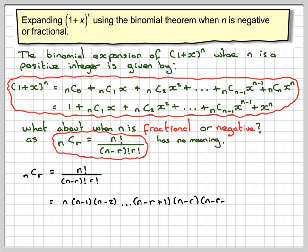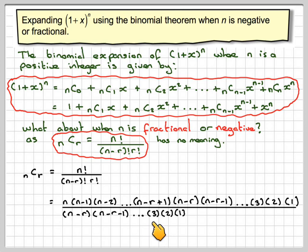Then (n-r-1), and carry on until 3·2·1 at the end. Dividing by (n-r)! means (n-r)·(n-r-1)... down until 3·2·1, and we'll still have that r!. Now you can see that the (n-r) will cancel out, also (n-r-1) will cancel out.